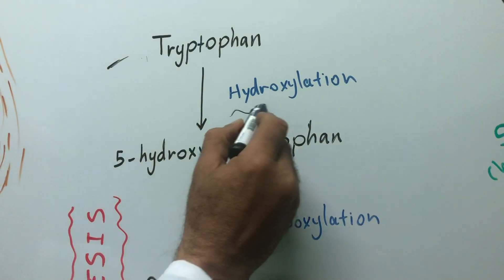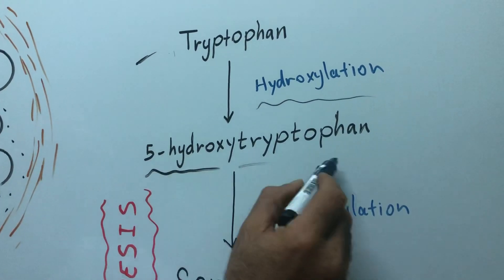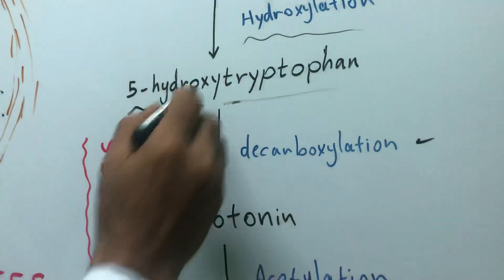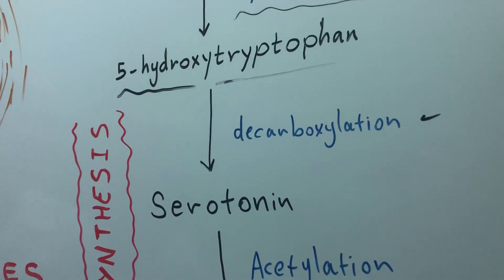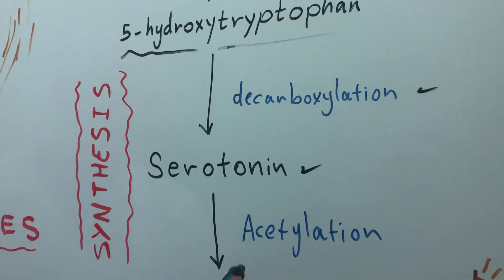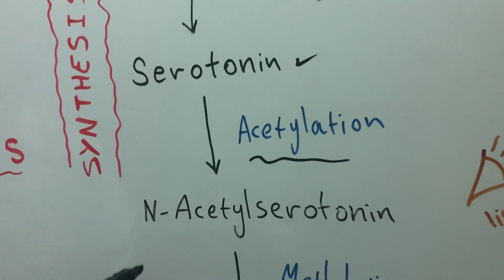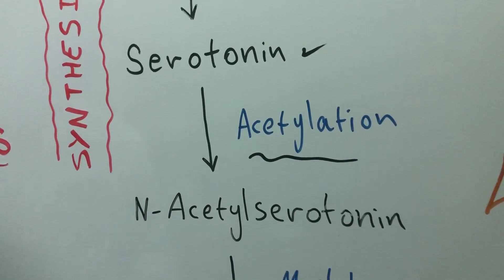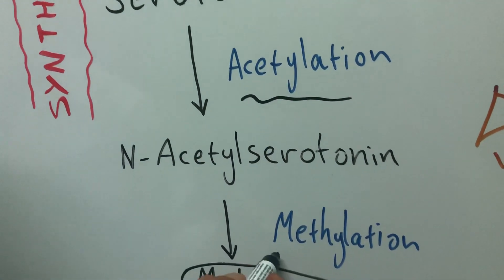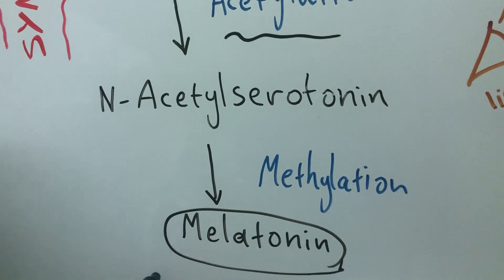First, there is a step of hydroxylation of tryptophan to form 5-hydroxytryptophan. Then there is a decarboxylation of 5-hydroxytryptophan to form serotonin. After that, there is an acetylation of a portion of the serotonin to form acetylserotonin, which is then methylated by the process of methylation to form melatonin.